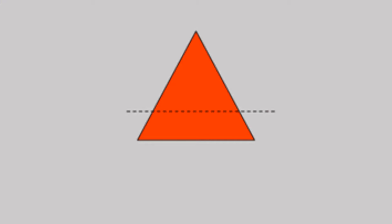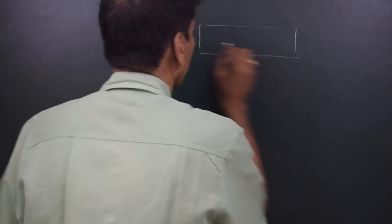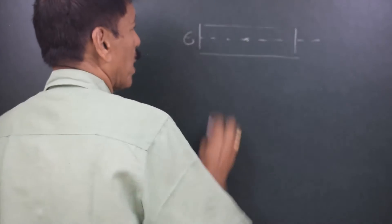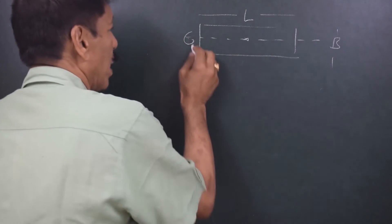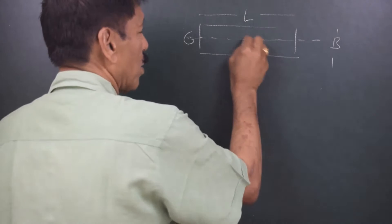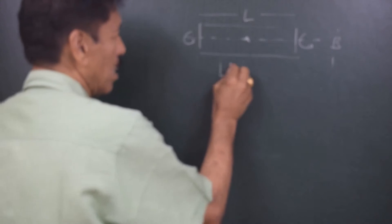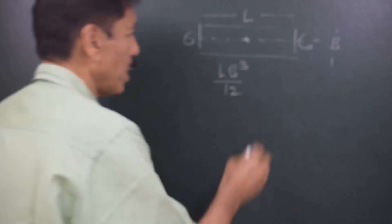Moment of inertia, or second moment of area — the unit is meter raised to 4. We will start with the basic shapes, starting with the rectangle. This is the centroid of the rectangle; this is the length. The axis is parallel to the length, passing through the centroid. The moment of inertia about this axis is LB³/12. As you can see, the unit would be meter raised to 4.